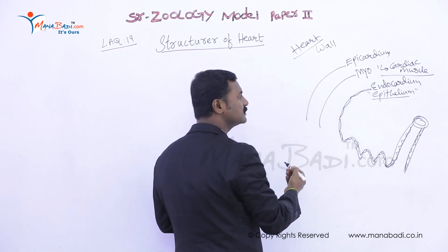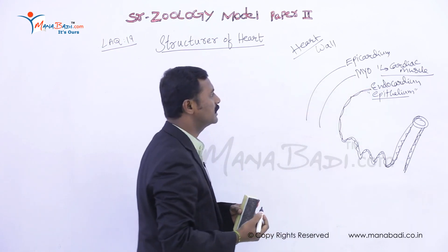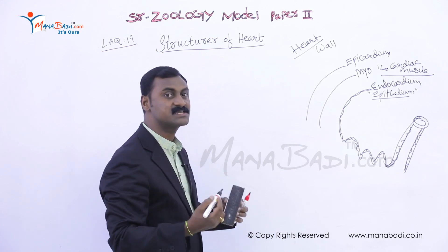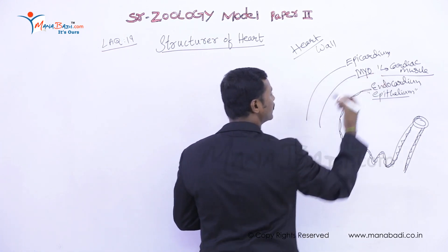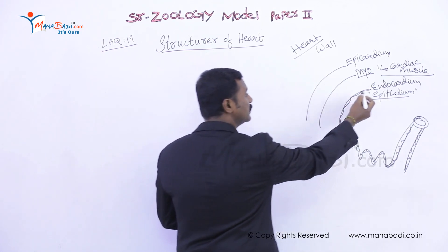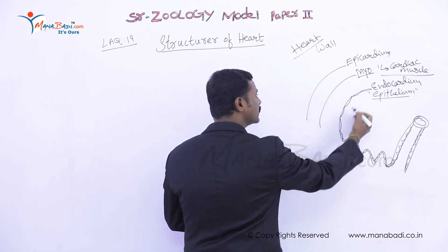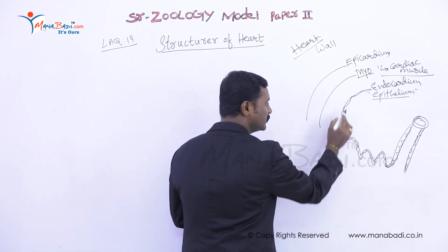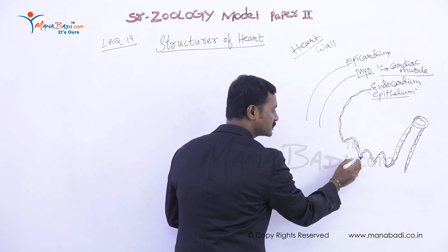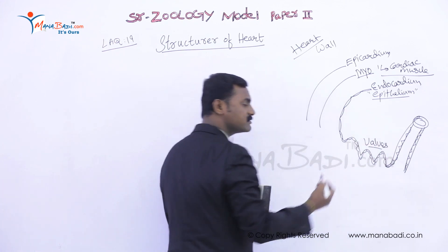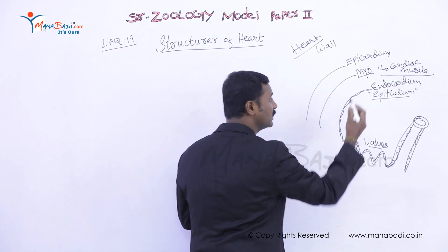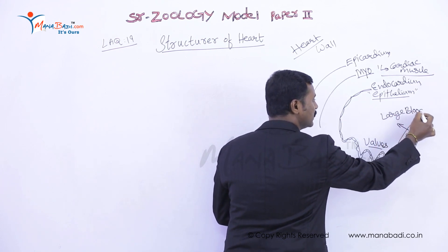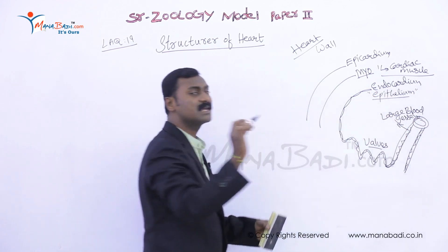The endocardium is the inner layer made with epithelial cells, also called endothelium. This endothelium lines not only the inner surface of the heart but also the walls of the bicuspid and tricuspid valves, and it provides lining to the large blood vessels as well.